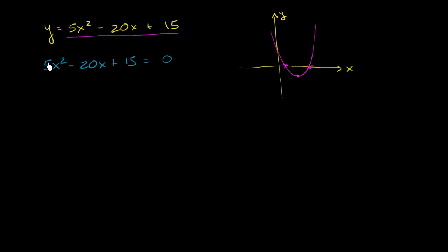Now the first thing I like to do whenever I see a coefficient out here on the x squared term that's not a 1 is to see if I can divide everything by that term to try to simplify this a little bit. And maybe this will get us into a factorable form. And it does look like every term here is divisible by 5. So I will divide both sides of this equation by 5.